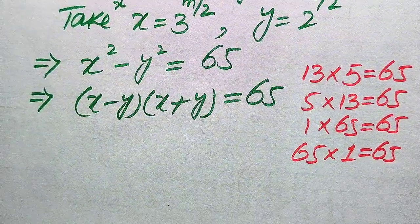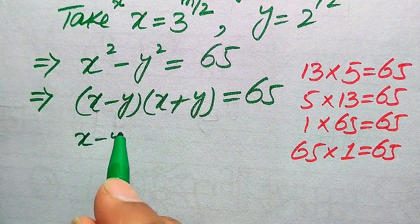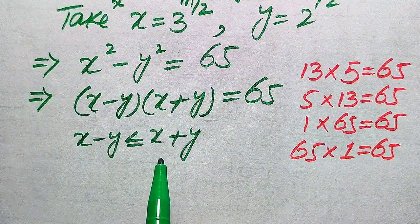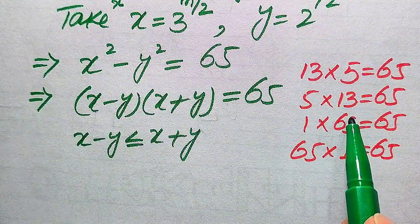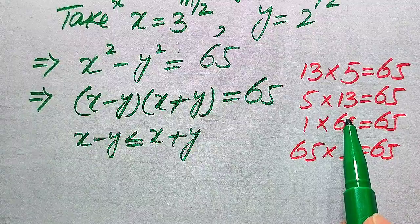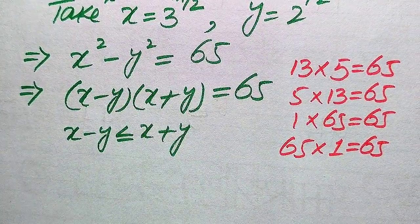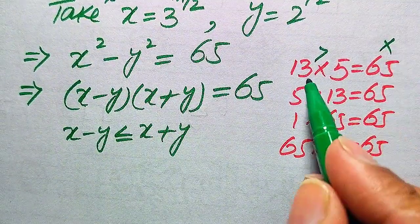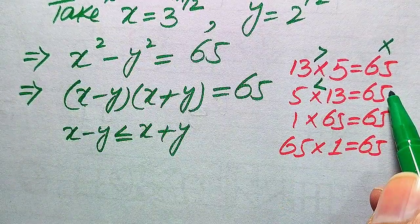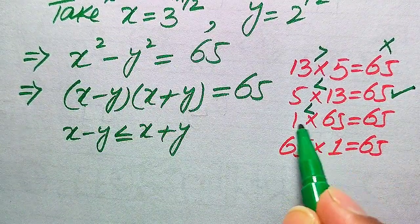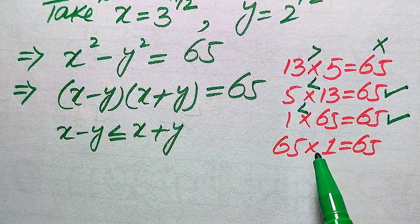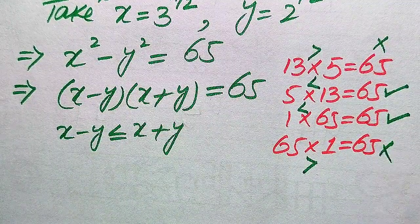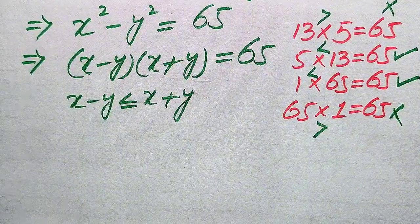We note that x minus y is always less than or equal to x plus y. So we choose pairs where the first factor is less than or equal to the second. 13 greater than 5 — rejected. 5 less than 13 — accepted. 1 less than 65 — accepted. 65 greater than 1 — rejected. So we have two valid possibilities.